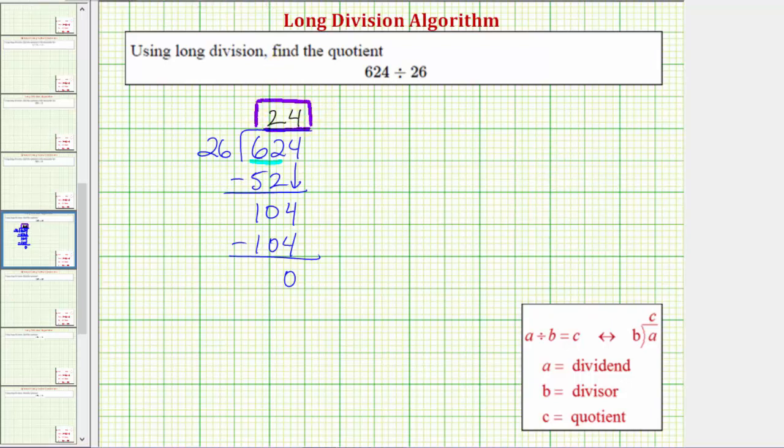Because 624 divided by 26 equals 24, we also know that 24 times 26 equals 624. The quotient times the divisor equals the dividend. There are 24 groups, or 24 copies, of 26 in 624. I hope you found this helpful.